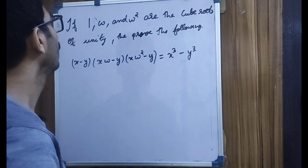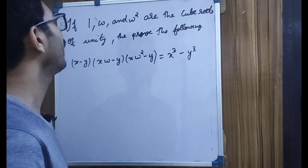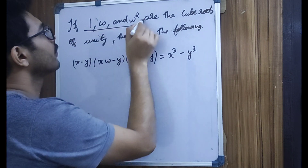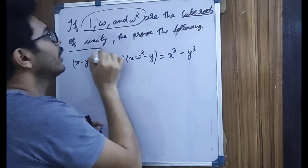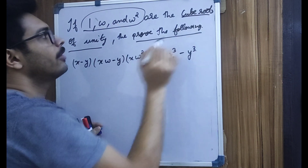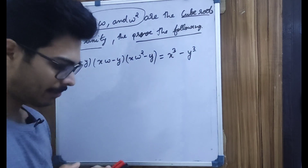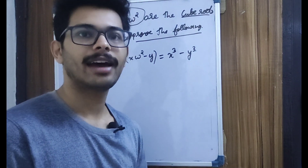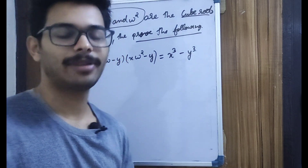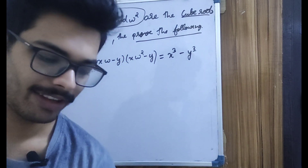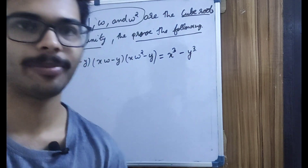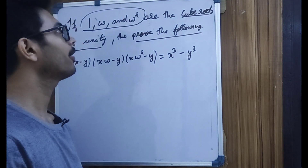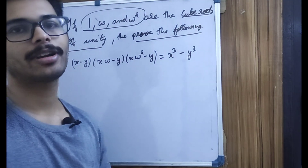If 1 plus omega plus omega square are the cube roots of unity, then prove the column. If you have to write the question, we write the question in this chapter — in the Q of unity, which is the same chapter.